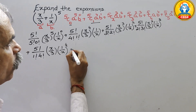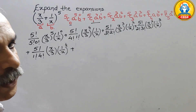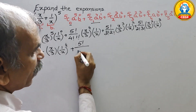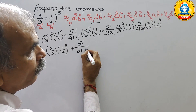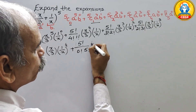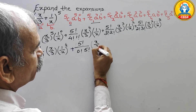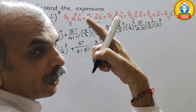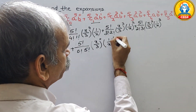Next comes 5C5, which is 5 factorial divided by 0 factorial times 5 factorial, and a to the power of 0 means (x/3) to the power of 0, and b to the power of 5 is (1/x) to the power of 5.